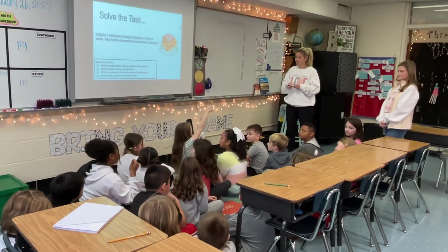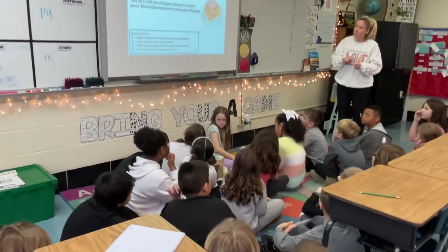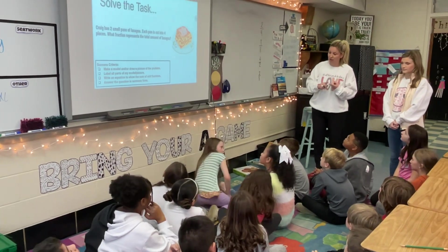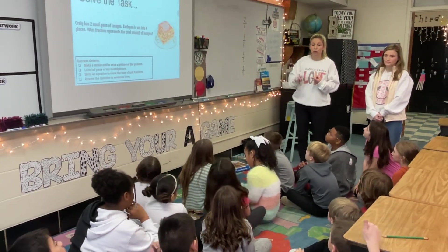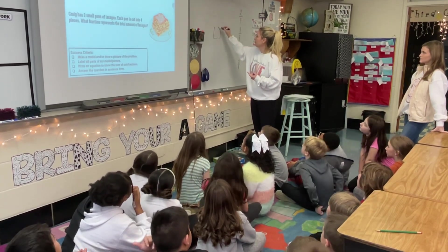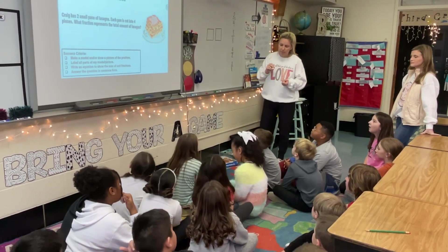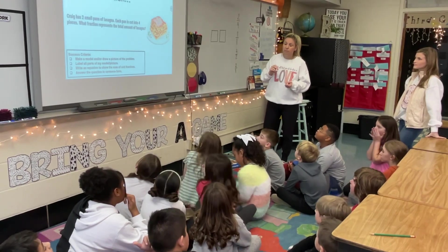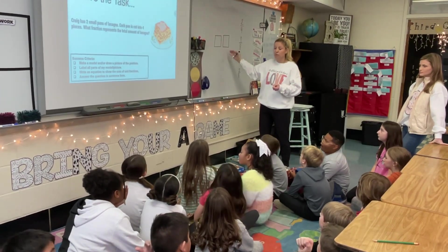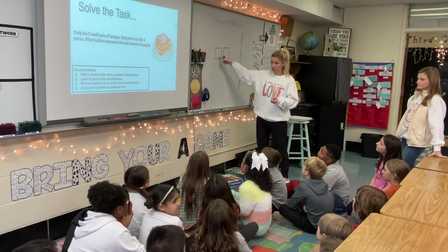Ava, would you like to explain how you got two-fourths? I knew that he had two pans, and then each pan is cut into fourths, so I just thought it was two-fourths. So he had two pans — would it help if I drew the pans as she's talking? Here are my two pans. And Ava, what did you say? They cut the lasagna into fourths. So each pan is cut into fourths — you're telling Maddie to cut this lasagna into fourths, okay?